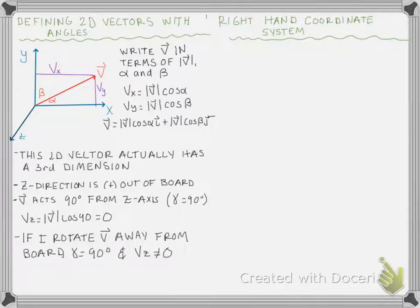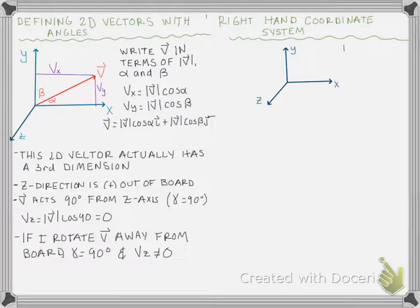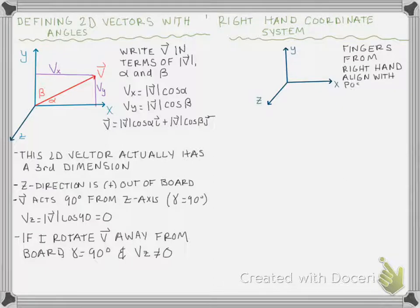The first thing we need to do whenever we work in three dimensions is set up a coordinate system. We need to pick an x, y, and a z direction. There is a correct way to pick your positive coordinate system, and it's by using the right-hand rule. So I could draw my positive x, y, and z axes. And how do I know if I've correctly identified the positive x, y, and z direction?